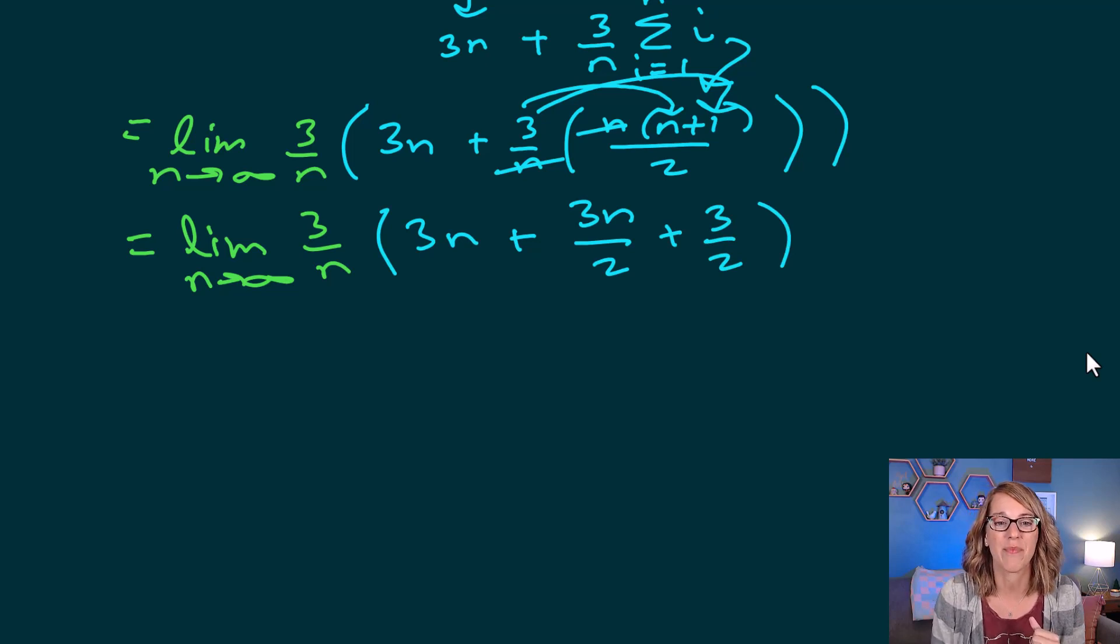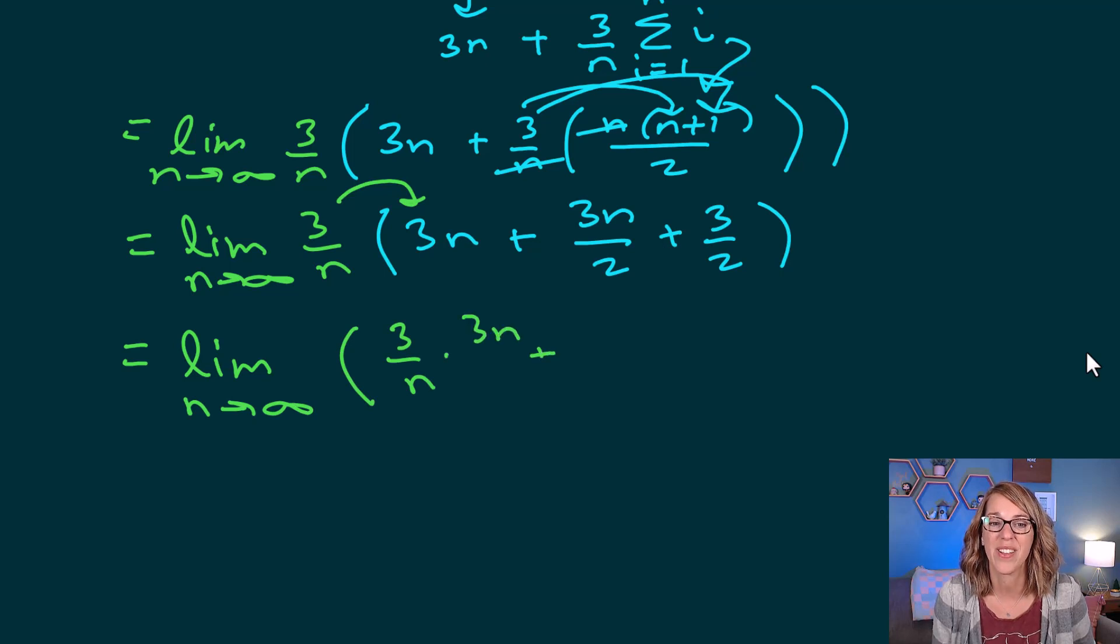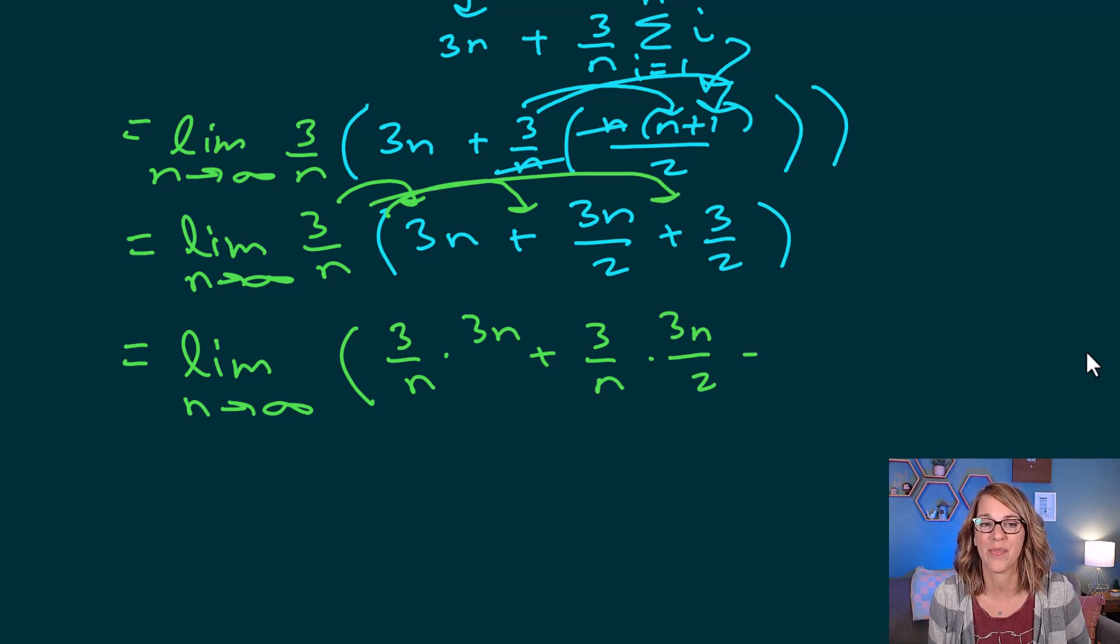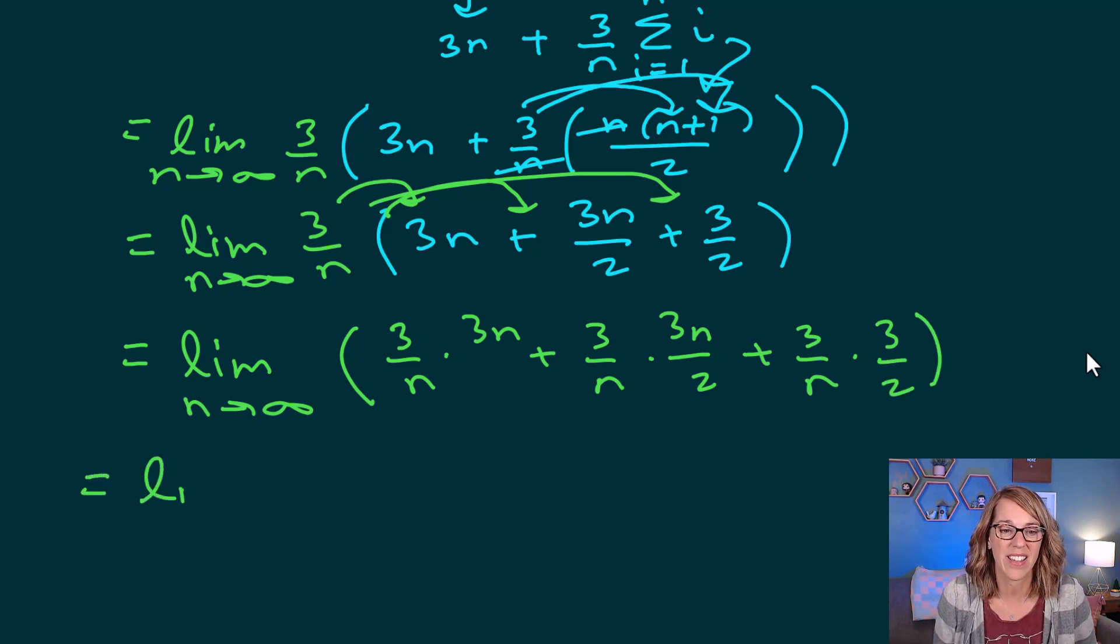Now I am ready to bring the 3 over n into the parentheses. Just about ready to apply that limit. So limit as n goes to infinity. I've got 3 over n times my 3n plus 3 over n times 3n over 2 plus 3 over n times 3 over 2.